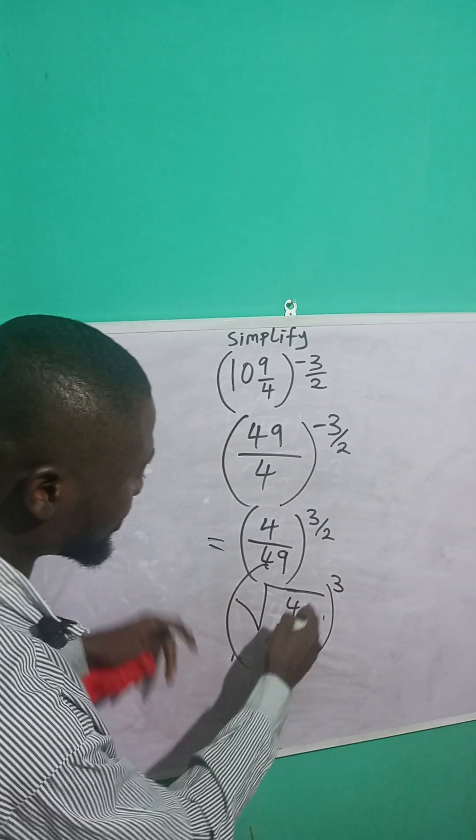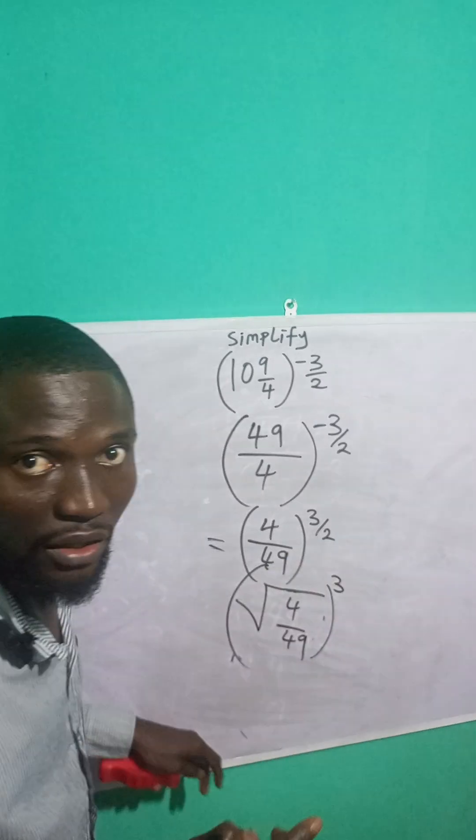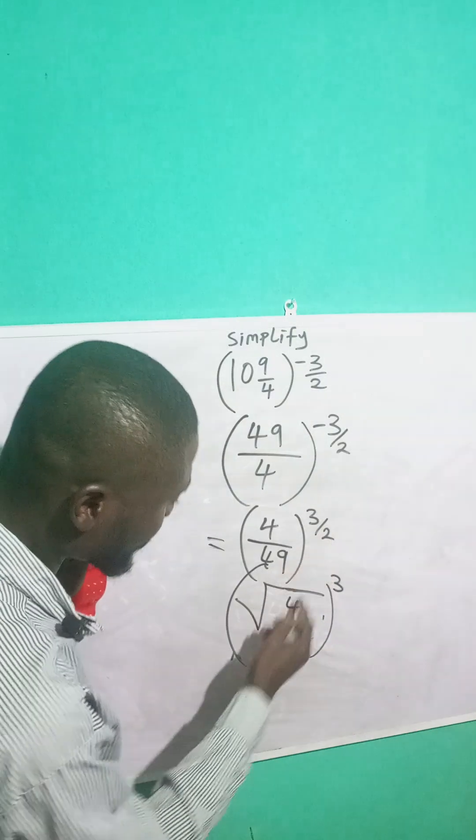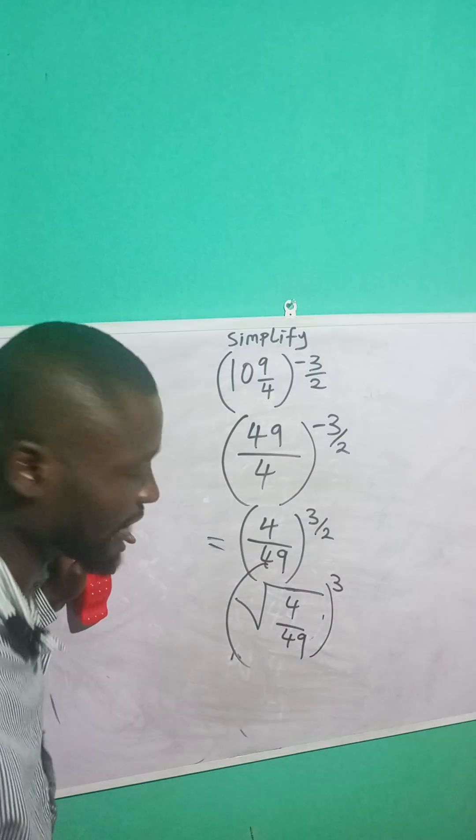This 2 is the square root, while this 3 is the power. It doesn't change anything. The 2 is the square root, while the 3 is the power. That's what I just applied.